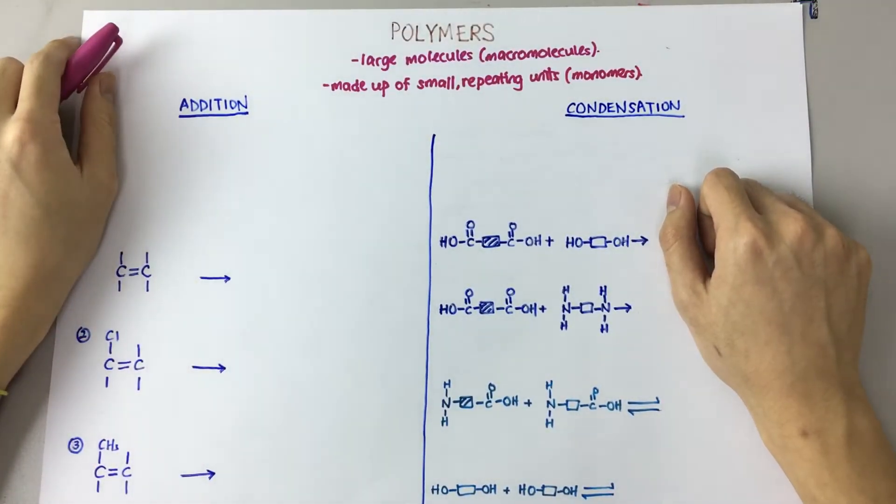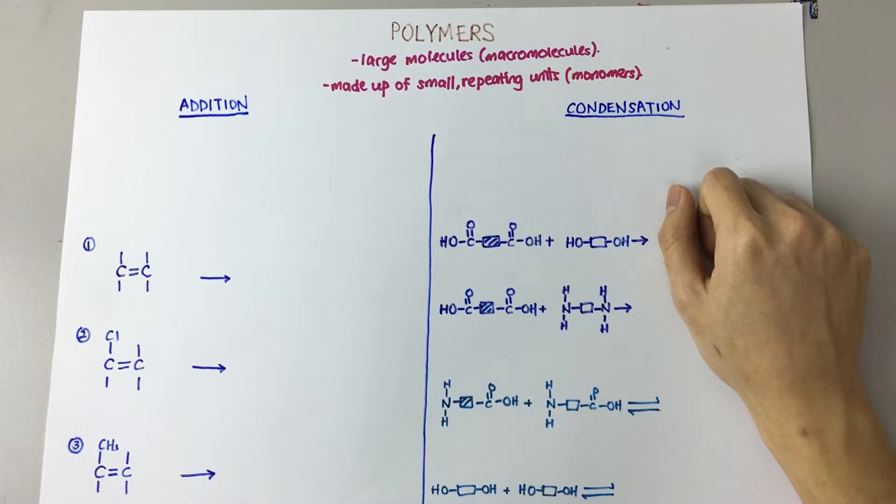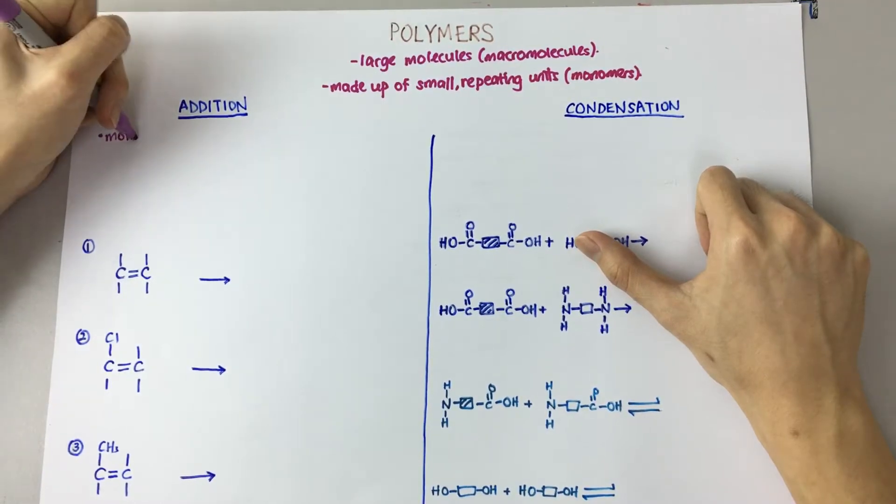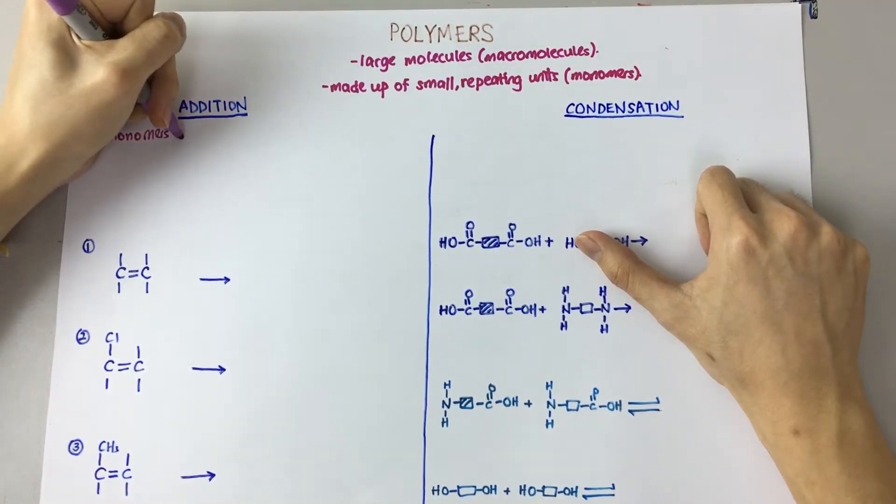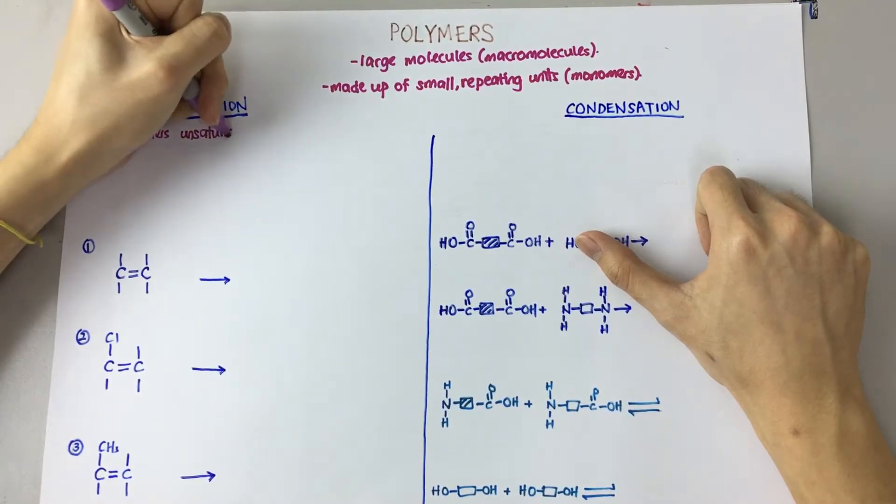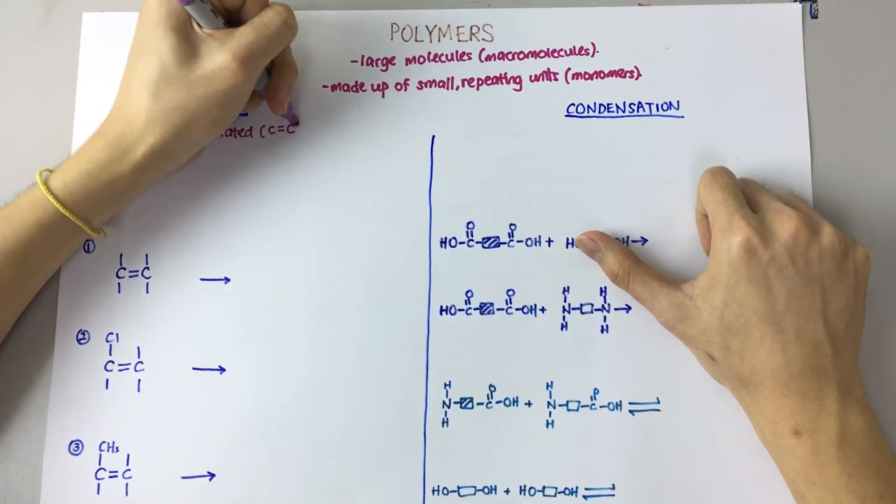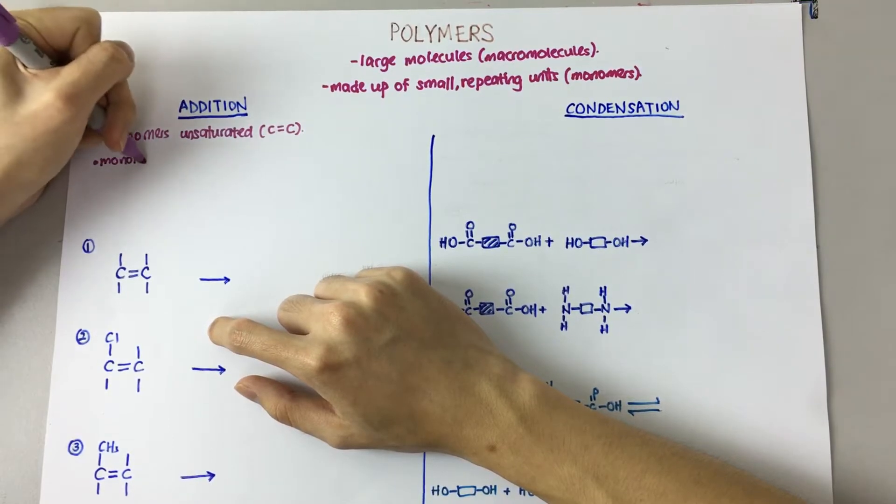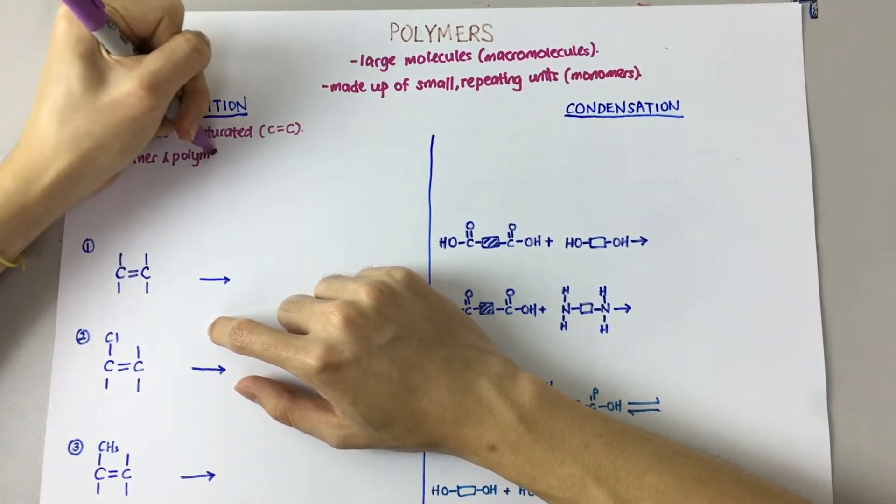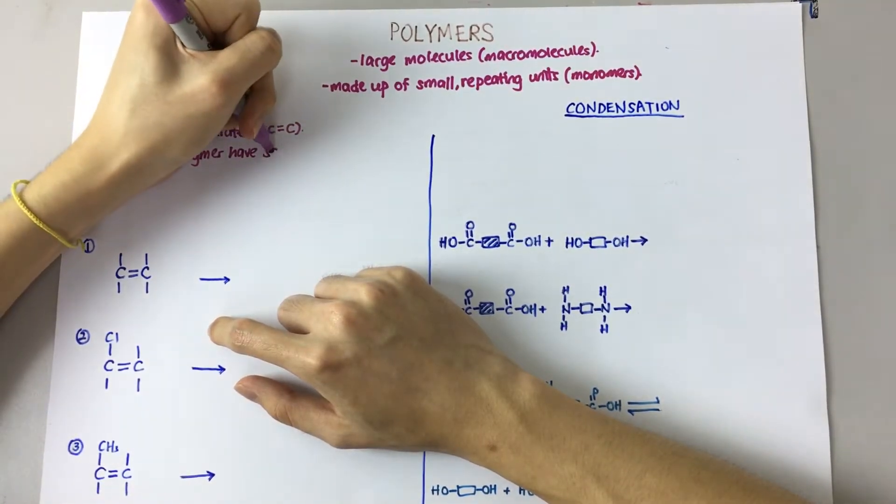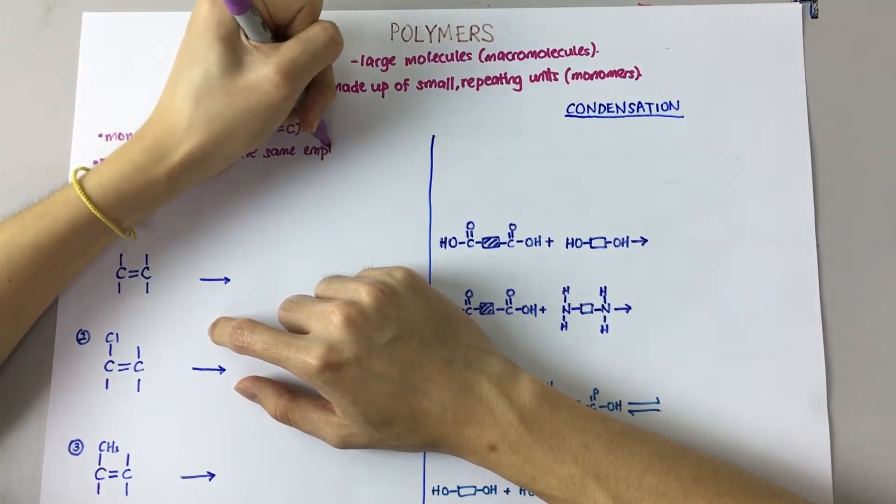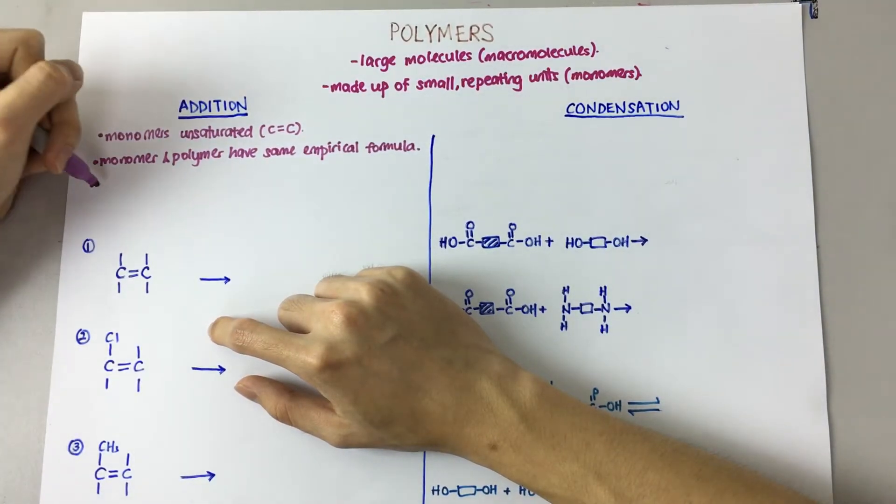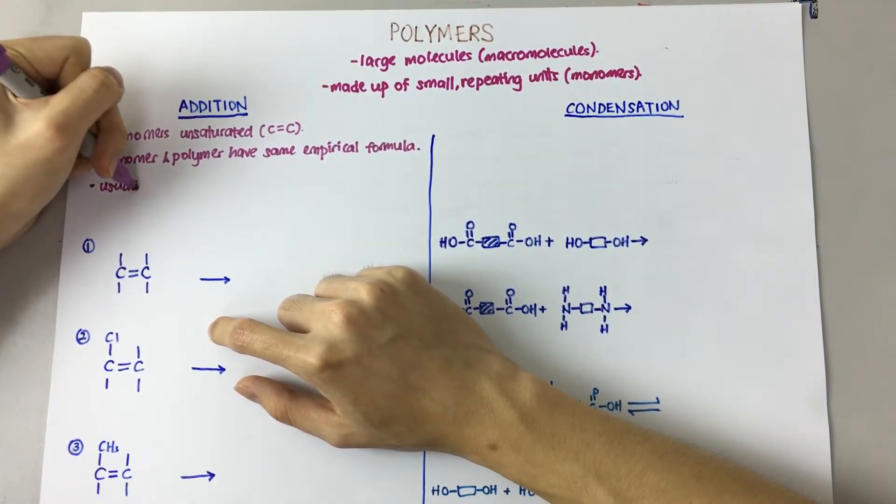Alright, now there are two kinds of polymers you need to know, which is addition polymer and condensation polymer. So, addition polymer - my monomers are usually unsaturated. That means I have a carbon-carbon double bond. Next thing, my monomer and my polymer have the same empirical formula. And thirdly, it's usually made out of only one monomer.